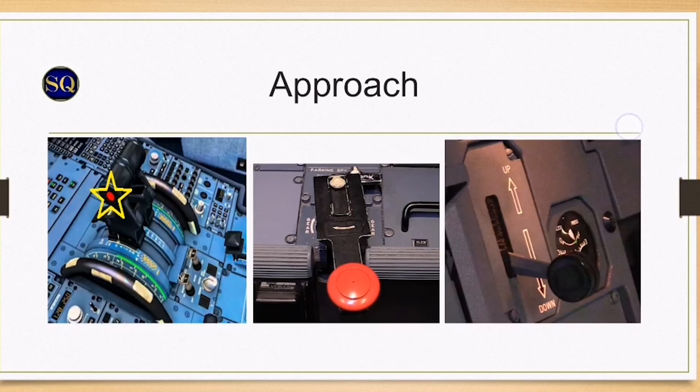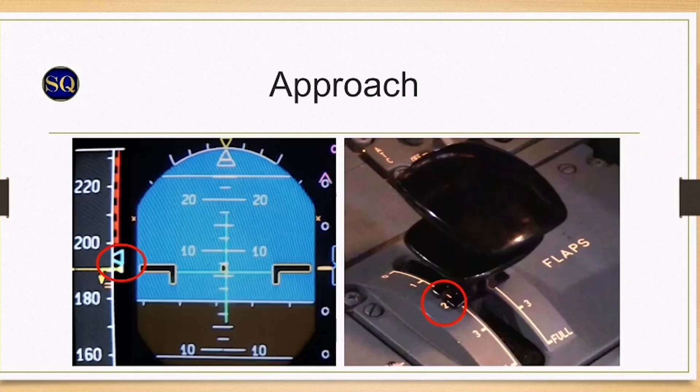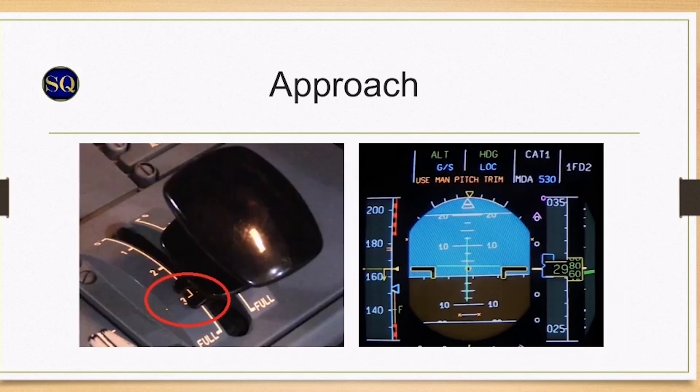Flaps one, select VFE next minus 5, which is in this case 195 knots. Flaps two, select VFE next minus 5, 180 knots. Flaps three, select VFE, decelerate to V-app. Pilot monitoring reviews the status to check that all approach procedure actions are complete.